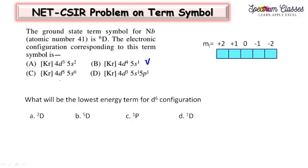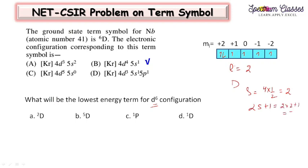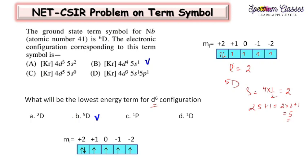The next question is: what will be the lowest energy term for a D6 type of configuration? D6 means 1, 2, 3, 4, 5 and 6 electrons. On adding, L will be equal to 2, giving us the term D. For S, we have 4 unpaired electrons, so S = 4 × (1/2) = 2, and the multiplicity 2S+1 = 5. So 5D will be the term symbol.